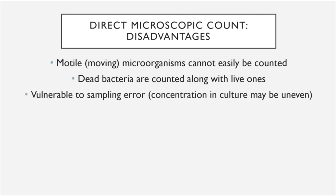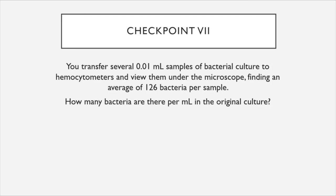Lastly, direct microscopic counts are vulnerable to sampling error — describing what happens when the concentration in a culture is uneven. For example, maybe microbes have settled toward the bottom but you take your 0.01 milliliter sample from the top, or vice versa. For our final checkpoint: if you transfer several 0.01 milliliter samples of bacterial culture to hemocytometers and find an average of 126 bacteria per sample, how many bacteria are there per milliliter in the original culture? Once you finish this checkpoint, you are finished with chapter 9.